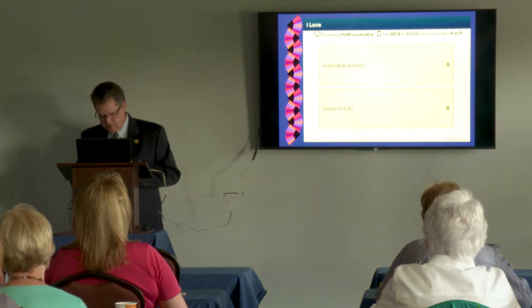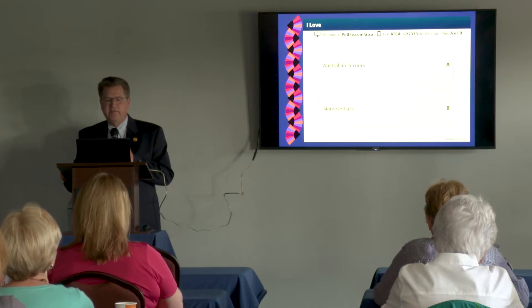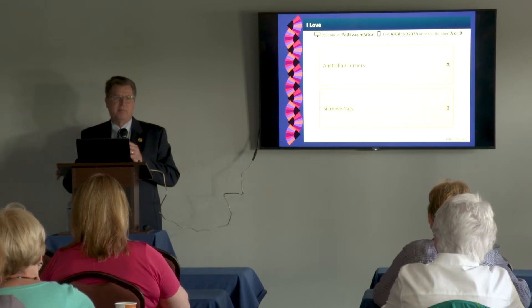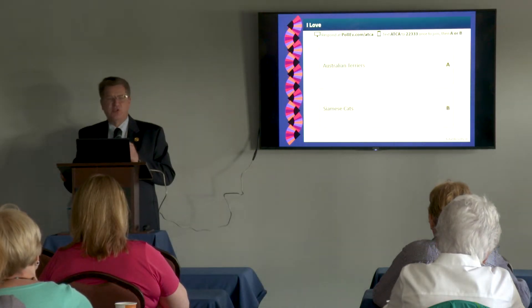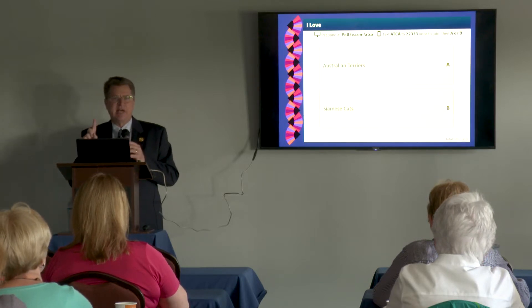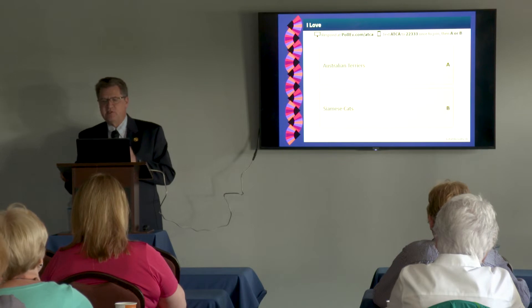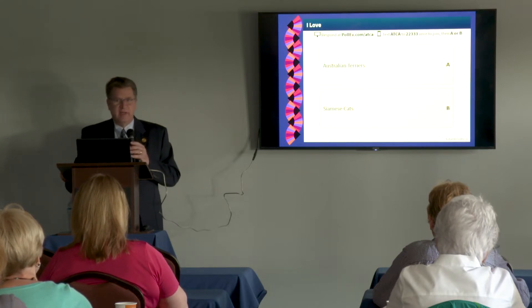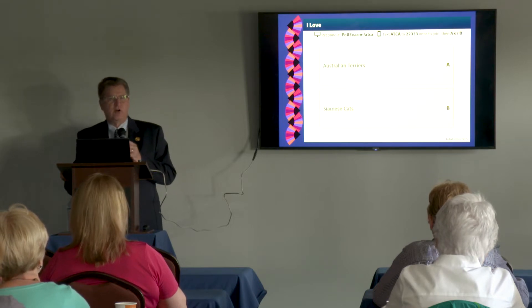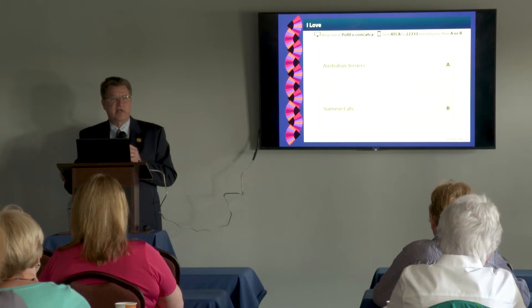Our first poll is an orientation poll. You can go to polev.com/ATCA and the poll questions will pop up on your screen, or you can text 22333 — put ATCA in the body of the text and hit send. From then on, just type your letter answer A or B. The question is: I love Australian Terriers, or I love Siamese cats — we just want to make sure you're in the right room.